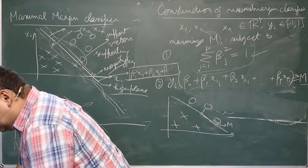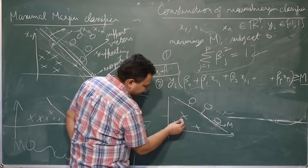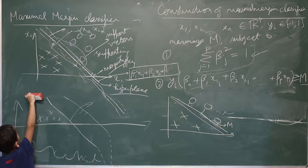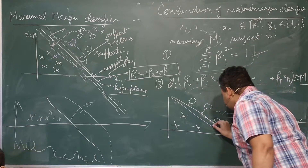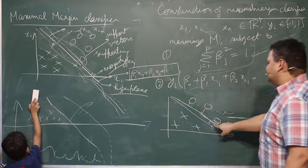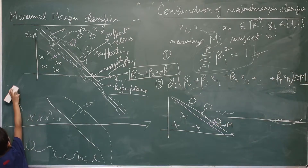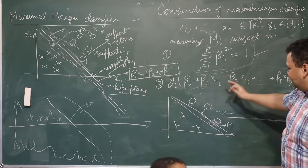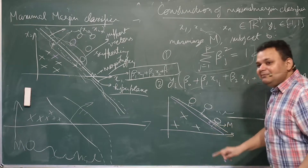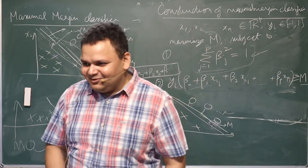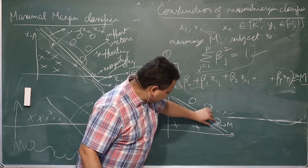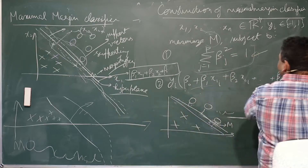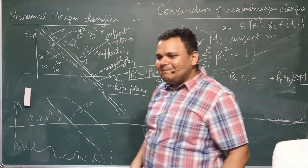If I draw a different line, capital M is going to be much larger than the previous case. We are iterating through all the possible hyperplanes so that this minimum margin can be maximized — the minimum distance between the plane and any of these points can be maximized. That is the goal. Is that clear mathematically to everybody? Yes sir.